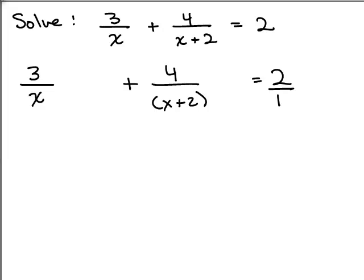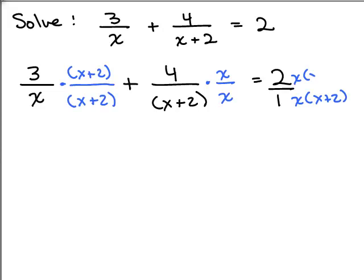I'm going to make all of them have the same denominator. So I would have to multiply this first term by x plus 2 over x plus 2. This term I'd have to multiply by x over x, and on the right hand side I'd have to multiply the bottom by x times x plus 2, which means I have to multiply the top also.